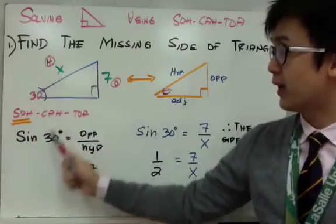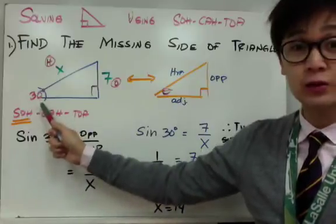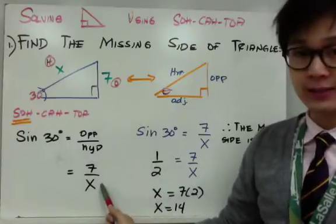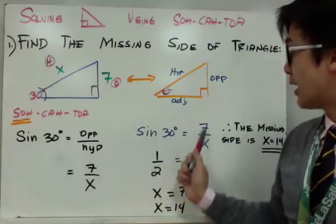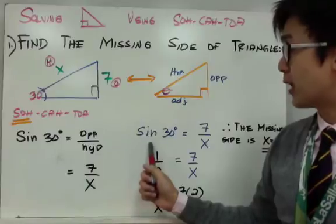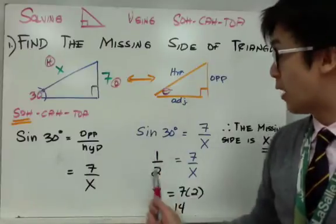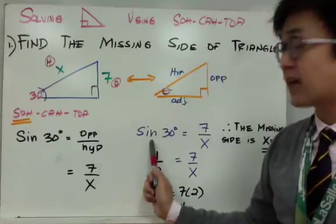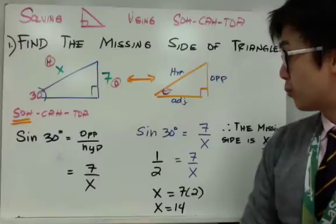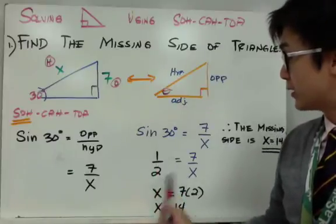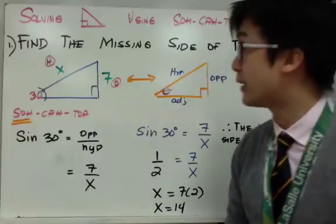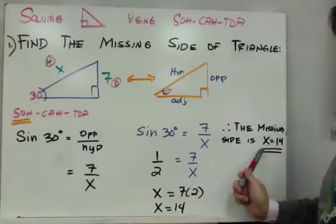To solve for this side, we set up sine 30° equal to opposite over hypotenuse. We know the opposite is seven and the hypotenuse is x, giving us sine 30° = 7/x. Since sine 30° equals one-half from the unit circle, we replace it: 1/2 = 7/x. Cross-multiplying gives us x = 7 × 2, so x equals 14. Therefore, the missing hypotenuse is equal to 14.